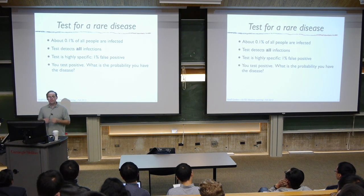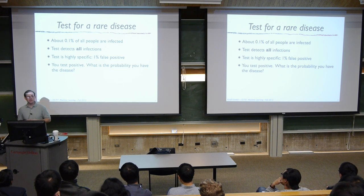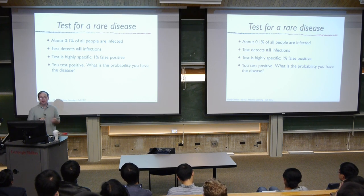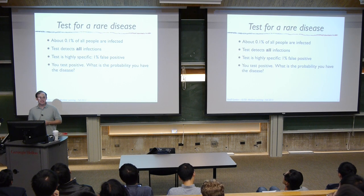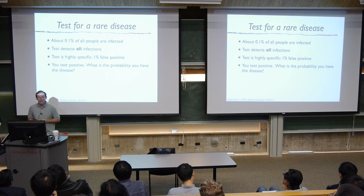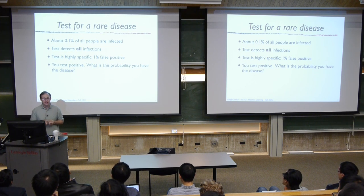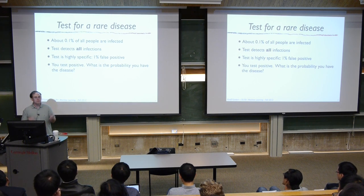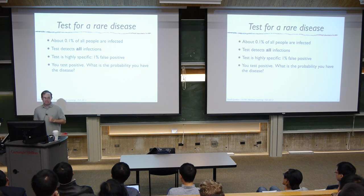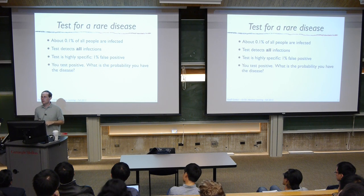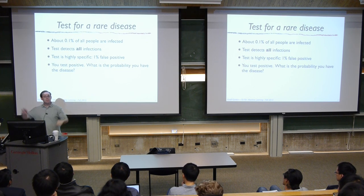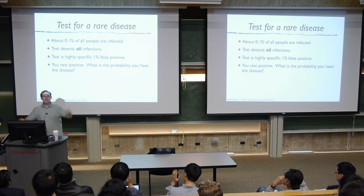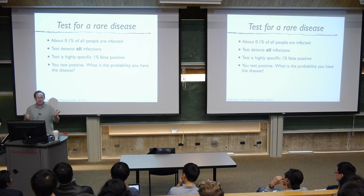Let's do some work with Bayes rule. There's a rare disease — call it Gordon's syndrome — infecting about 0.1% of the population. We have a test that detects every infection with only a 1% false positive rate. You test positive. How many people think the probability you have Gordon's syndrome is near 100%? About two-thirds? About one-third? Near zero? The probability is in fact near zero — let's use Bayes rule to convince ourselves.